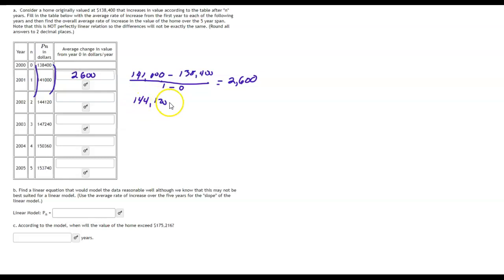$144,120 minus the $138,400. Now that's going to be over 2 minus 0. Of course that's just two years. You don't have to minus 0 every time. And then we'll do that calculation.